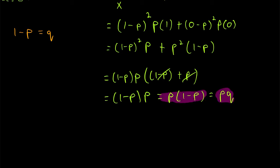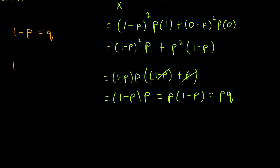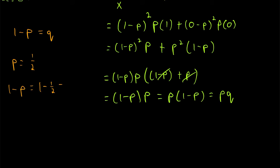The variance of a Bernoulli random variable with probability of success p equals p times (1 minus p). For example, if we're flipping a coin and call heads a success, then p equals 1/2. Tails is a failure, so 1 minus p equals 1/2, and the variance of our coin-flipping random variable equals (1/2)(1/2) = 1/4.